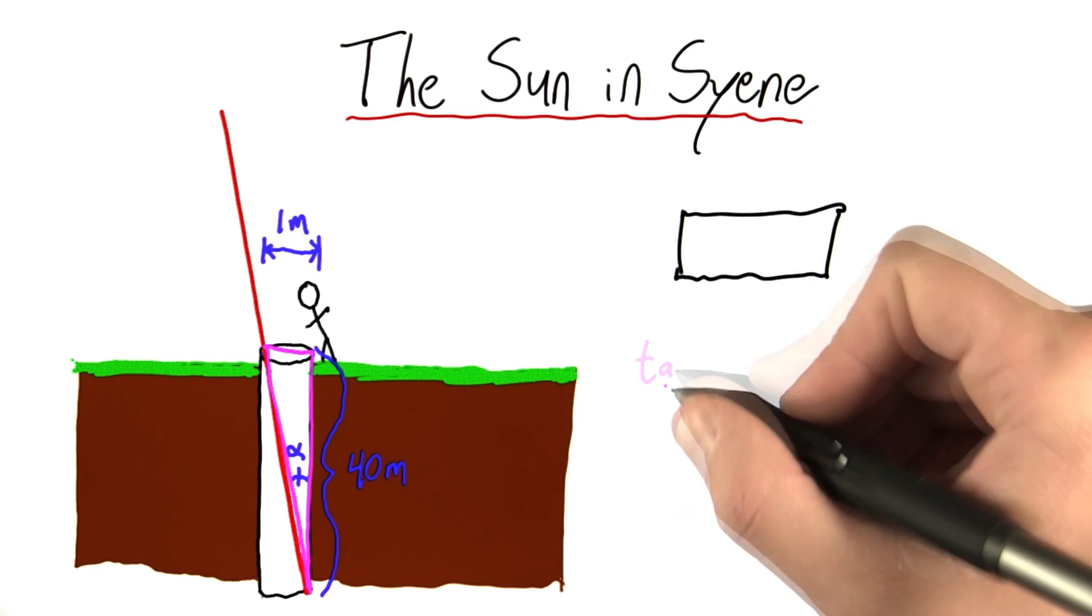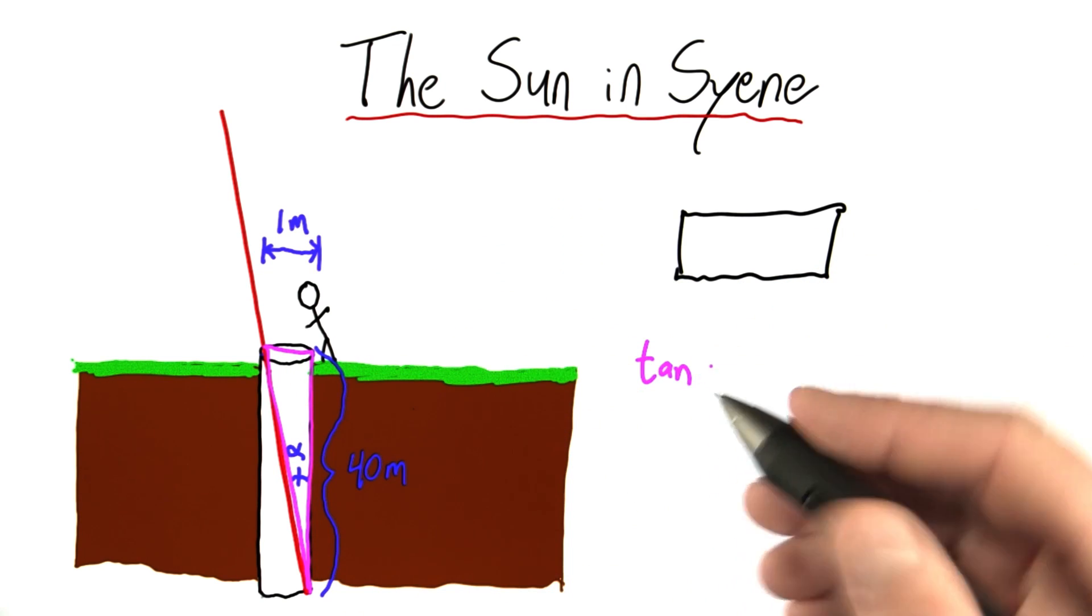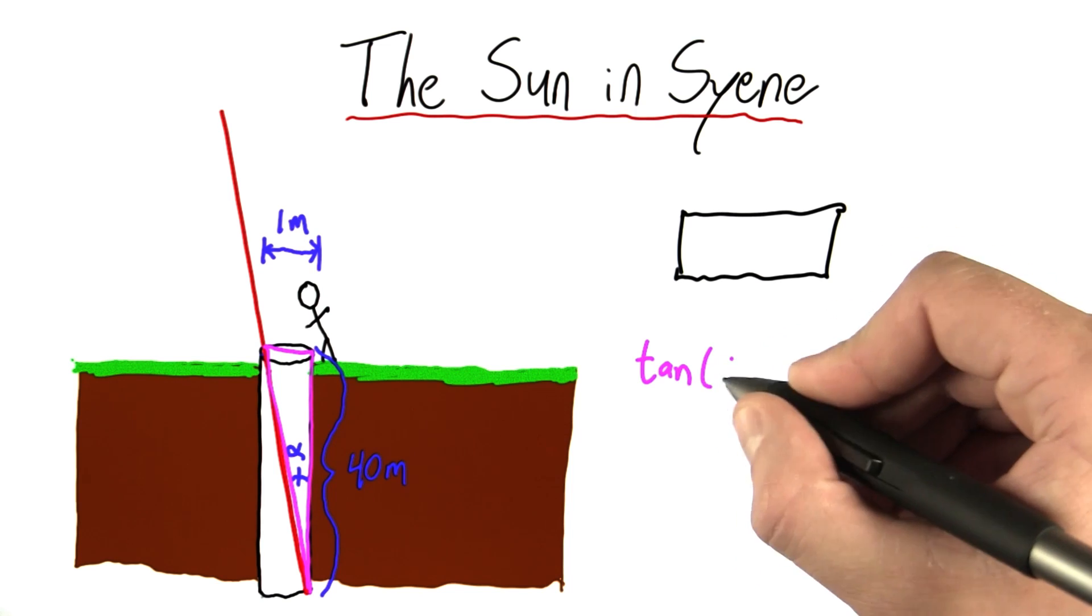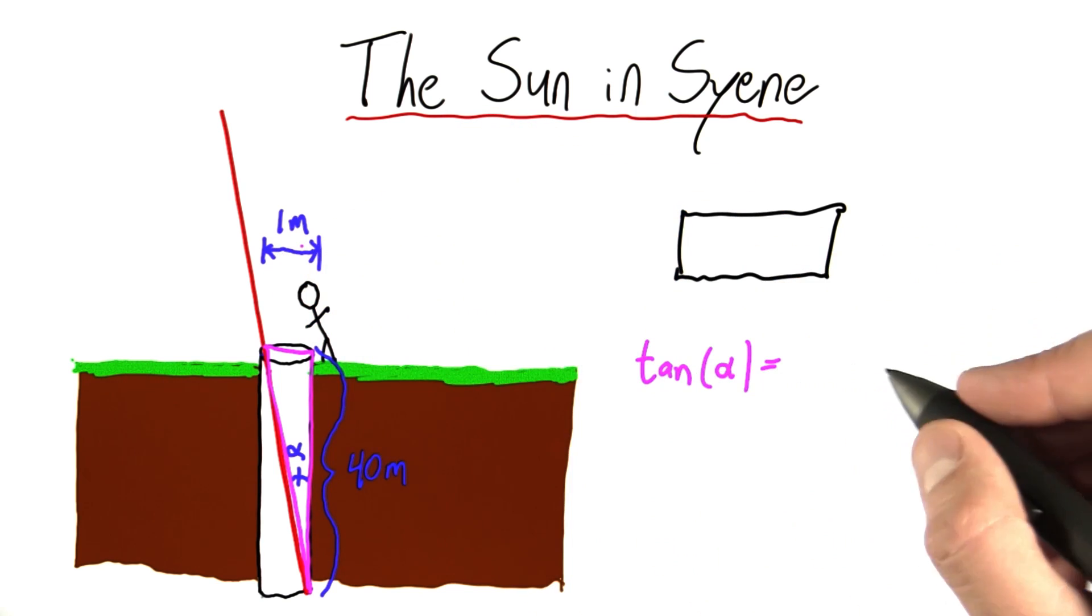Okay, so we have our right triangle. I know the opposite and the adjacent, which means I'm going to use tangent. And I'm going to say the tangent of alpha is equal to 1 over 40.